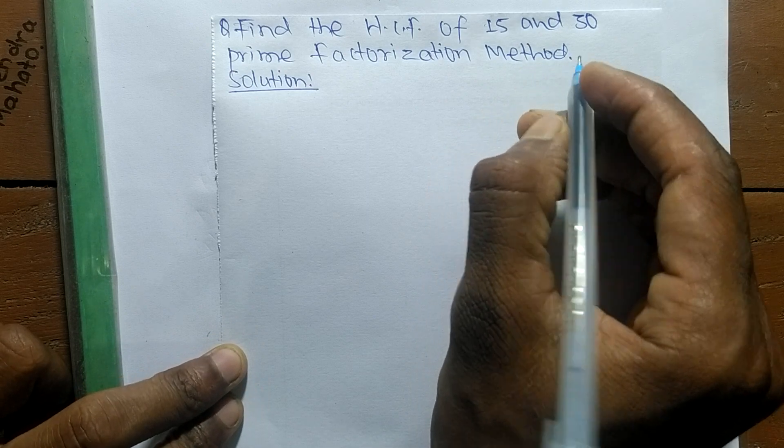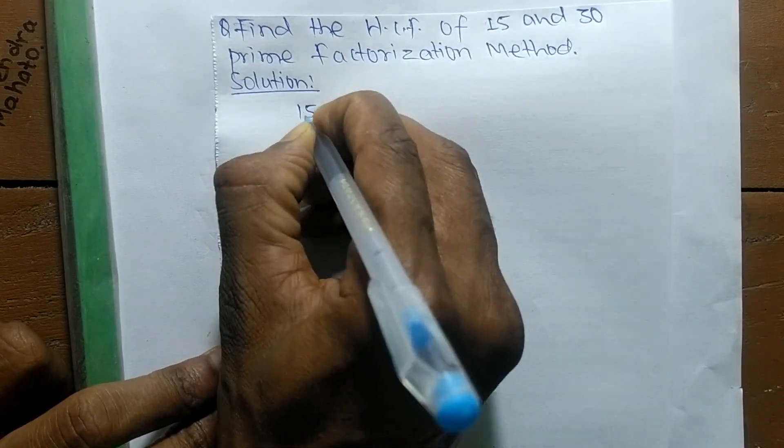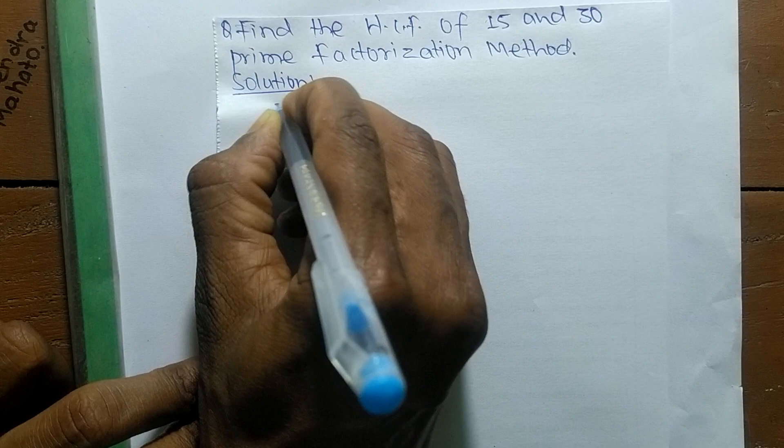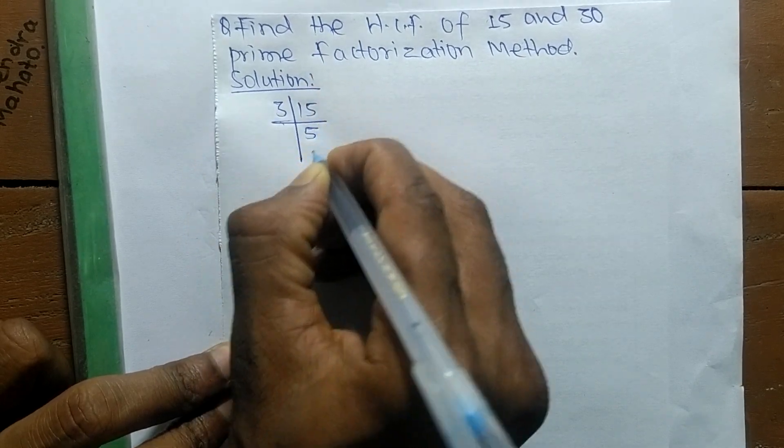First of all, we find out the prime factors of 15. It is 3 times 5, which means 15.